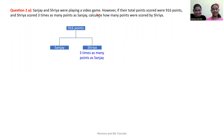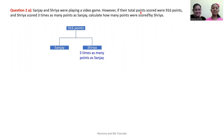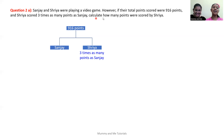What video game? Fortnite. If their total points scored was 916 points and Shreya scored three times as many points as Sanjay, calculate how many points were scored by Shreya.